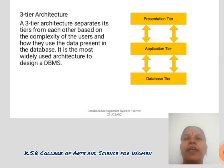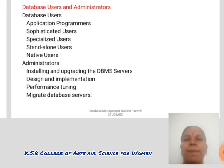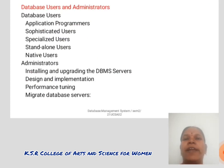Three-tier architecture separates tiers from each other based on the complexity of the user and how much data is present in the database. It is the most widely used architecture to design a DBMS. Database users include: administrator, database user, application programmers, sophisticated user, and specialized user.